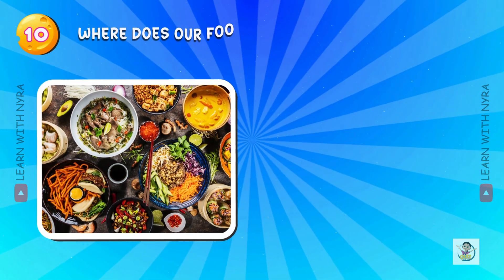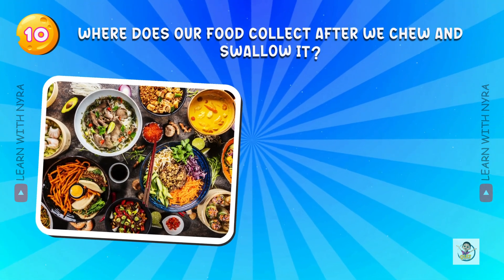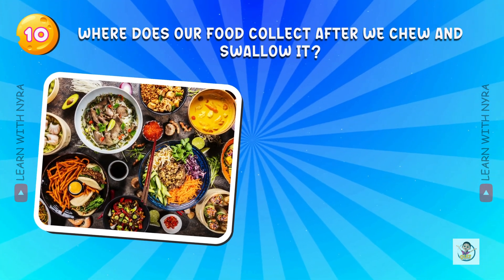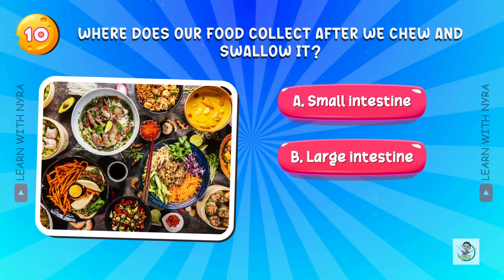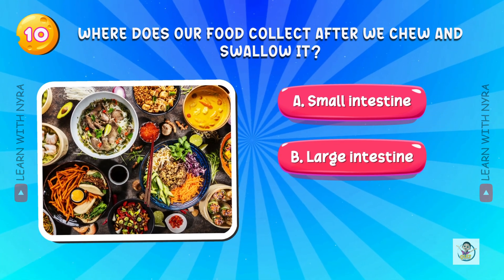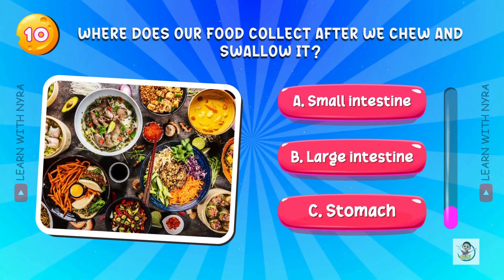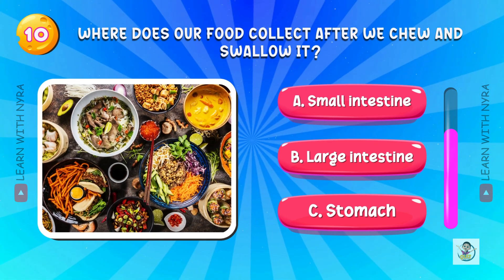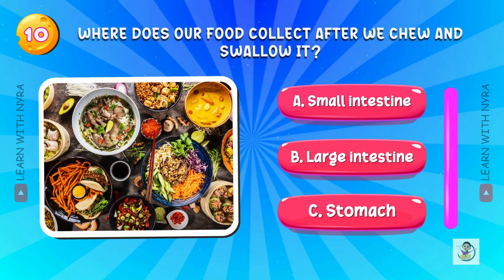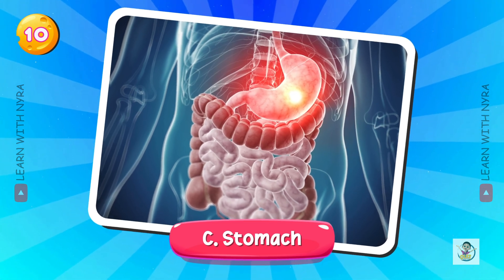Where does our food collect after we chew and swallow it? A. Small intestine, B. Large intestine, C. Stomach. And the answer is C. Stomach.